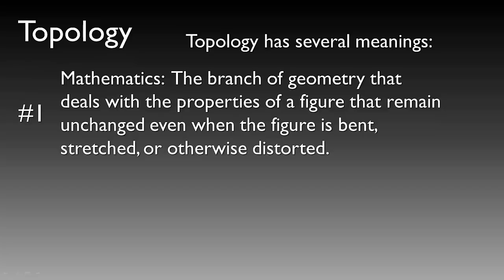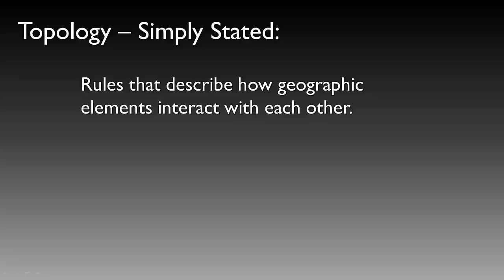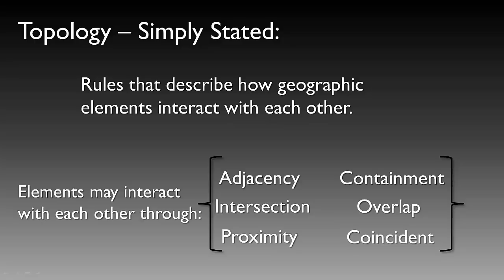Topology has several meanings. Within mathematics, topology is the branch of geometry that deals with properties of a figure that may remain unchanged even when the figure is bent, stretched, or distorted. With respect to GIS, topology defines the spatial relationships between connecting or adjacent features in a geographic data layer. With respect to this course, topology simply states rules that describe how geographic elements interact with one another.